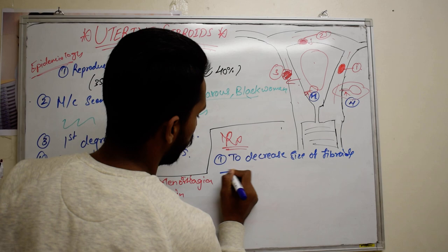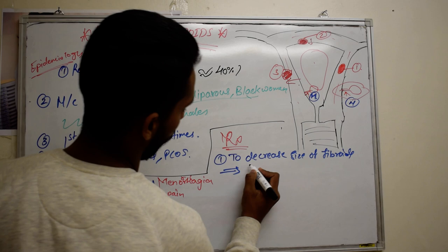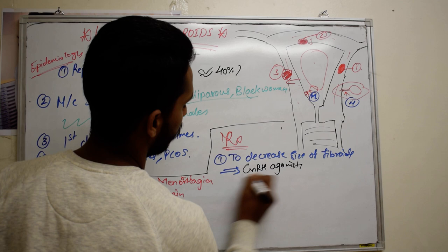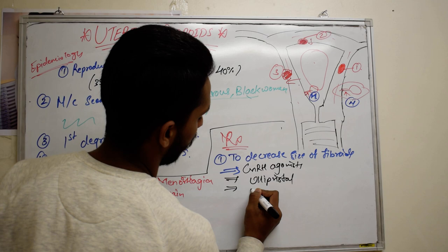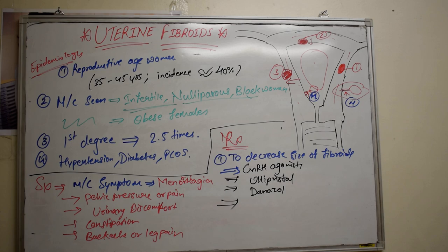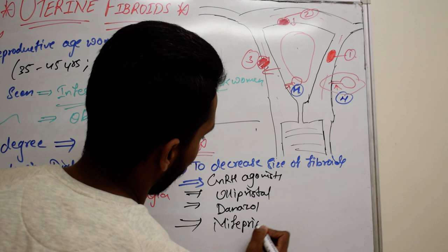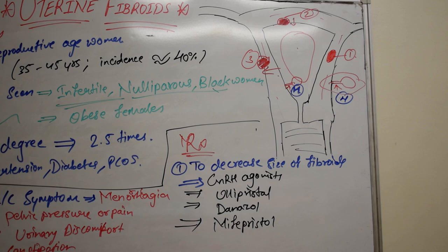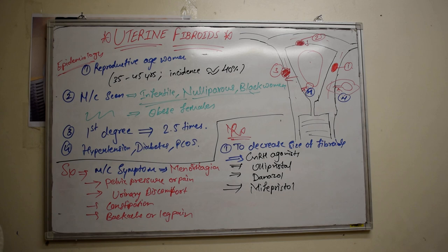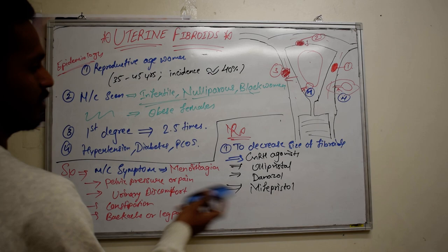To decrease the size of fibroids, we can give GnRH agonists, ulipristal acetate, danazole, and mifepristone. But eventually we'll have to go for surgical management, which will remove the disease, because these drugs only help to decrease the size of fibroids.